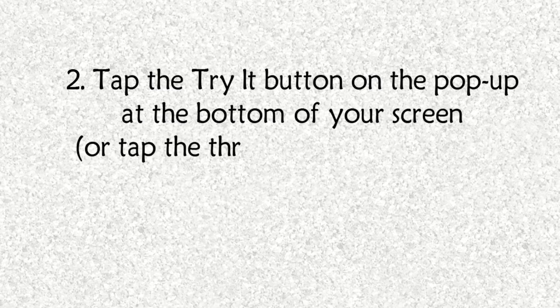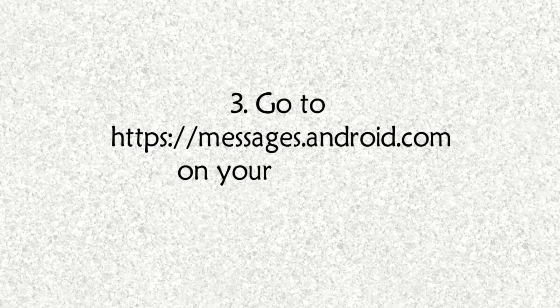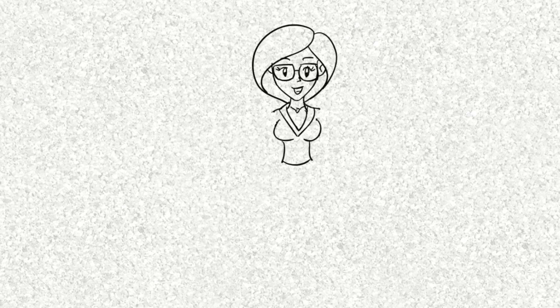Or tap the three dots at the top right and then Messages for Web. Step 3: go to https://messages.android.com on your computer. Step 4: tap Scan QR Code on your phone to scan the code shown on your computer. After scanning your code, you'll be ready to start using Android Messages for the web.